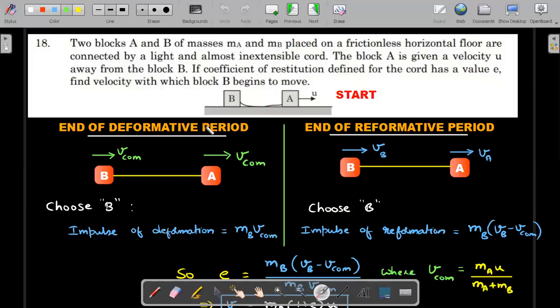Choose the B block because he's asking for the B block. I ask B block, how much impulse of deformation did it feel? B was not having any momentum. Now B is having a rightward momentum of MB into VCOM. Therefore, total impulse of deformation that B had imparted was MB into VCOM. Similarly, choose B for the end of reformative period. Imagine the deformative period continued into reformation - tension continued to act. VCOM will increase to VB and since tension here will act backward, VCOM here will decrease to VA.